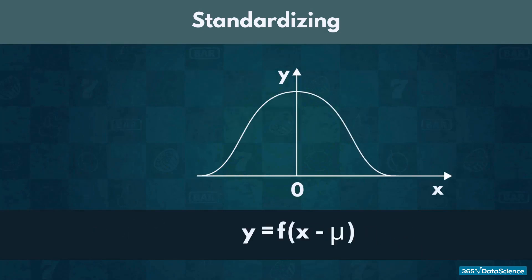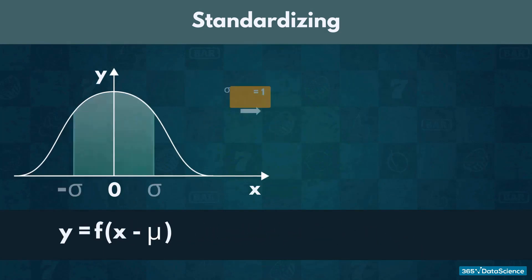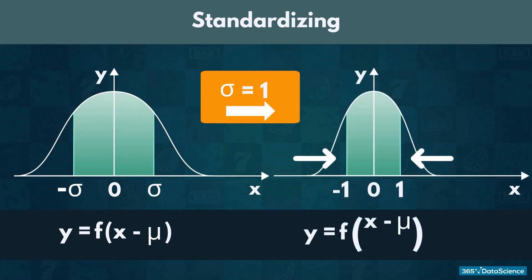After this, to make the standardization complete, we need to make sure the standard deviation is 1. To do so, we would have to divide every element of the newly obtained distribution by the value of the standard deviation, σ.